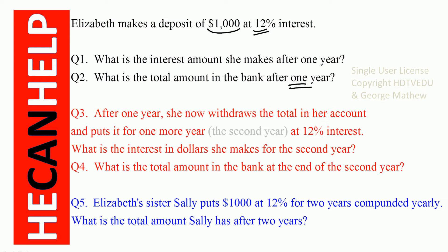Question number three: after one year, she withdraws the total in her account and puts it in for one more year — let's call it the second year — at 12% interest. What is the interest in dollars she makes for the second year? Question number four: what is the total amount in the bank at the end of the second year?